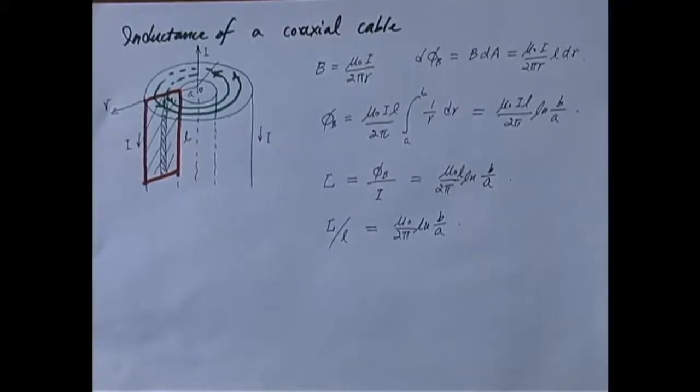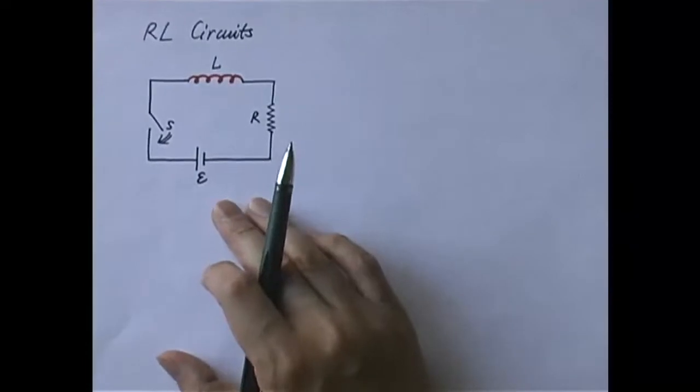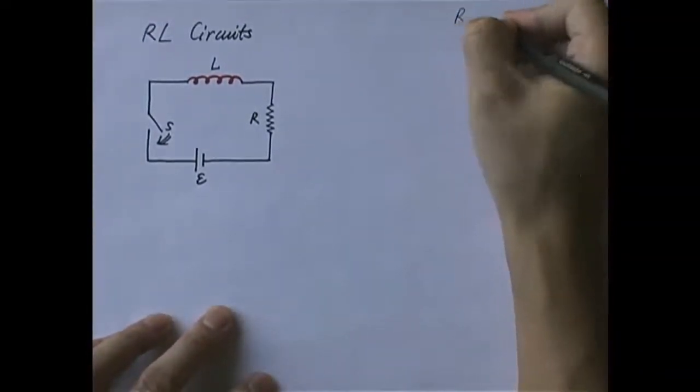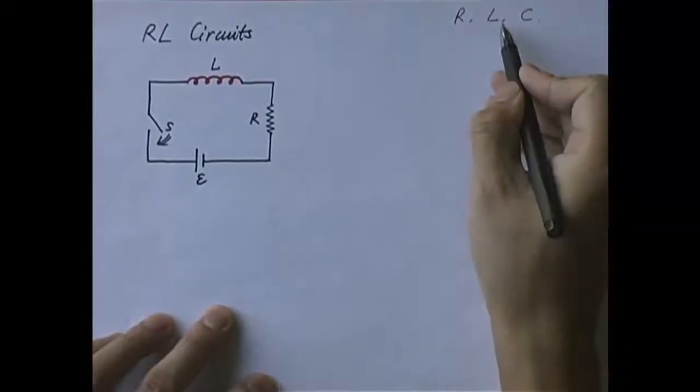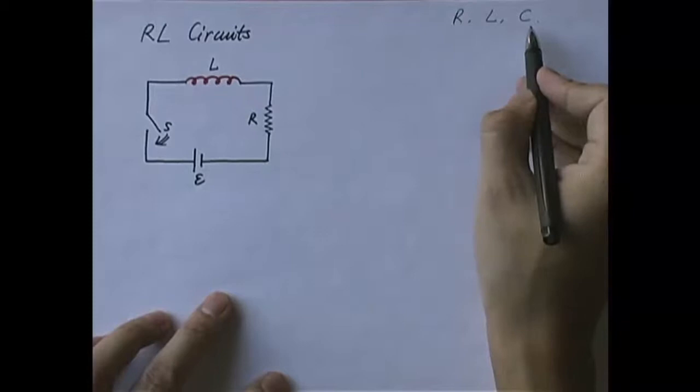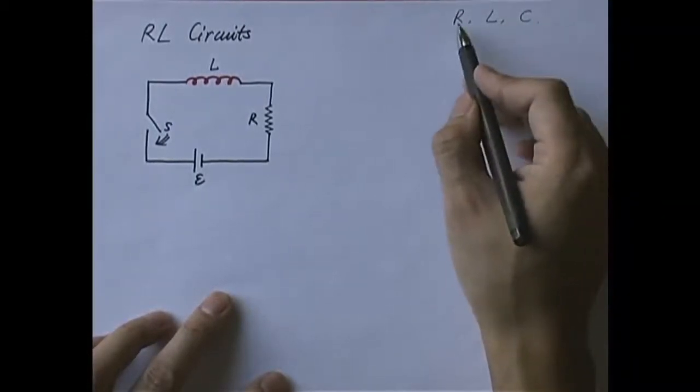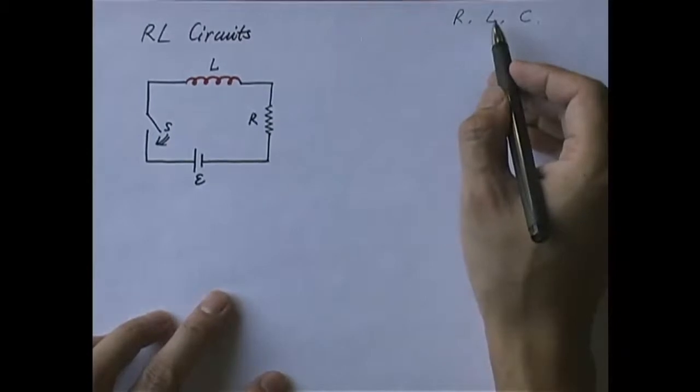Okay, but now what we're going to do is we're going to examine the so-called RL circuit. You see, we have R, L, and C. L is the newly introduced element. We had only R and C before. We can combine all of them together.